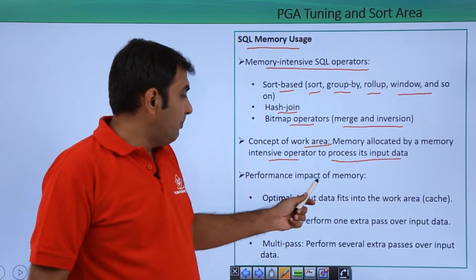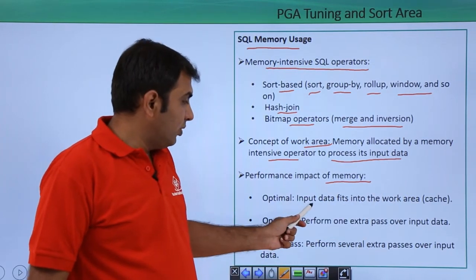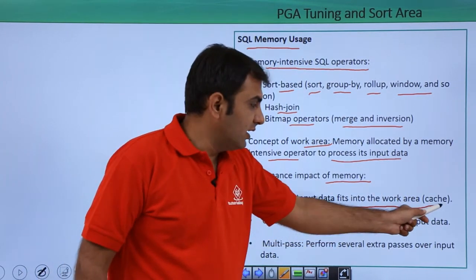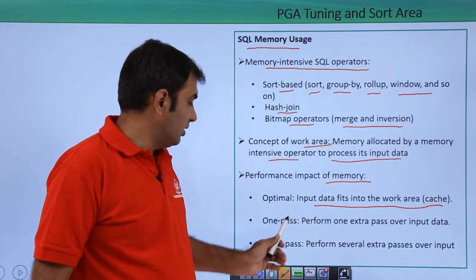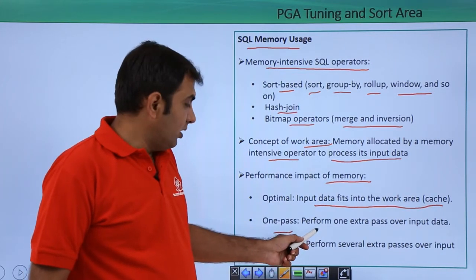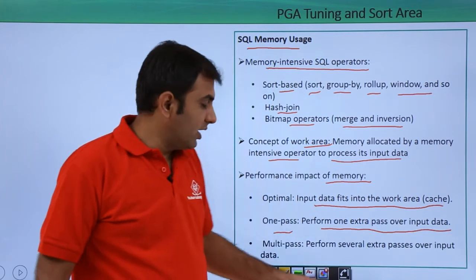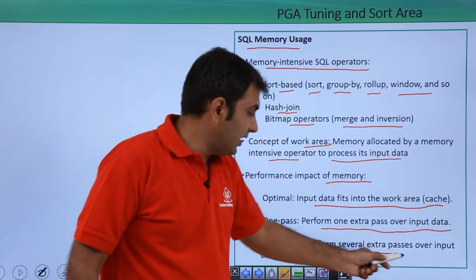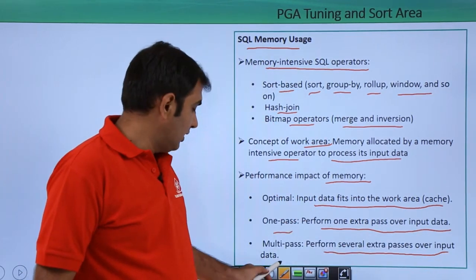Performance impact on memory: Optimal means the input data fits into the work area — this is optimal performance. One-pass means performing one extra pass over the input data. Multi-pass means performing several extra passes over the input data.